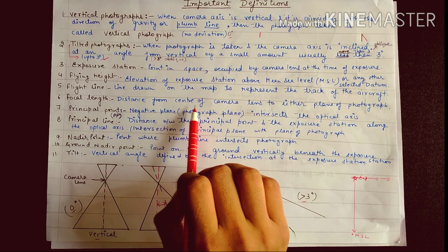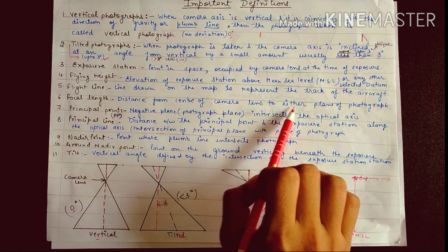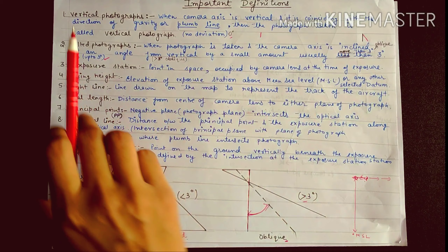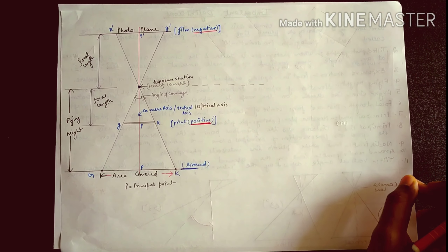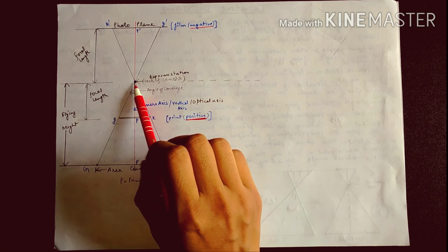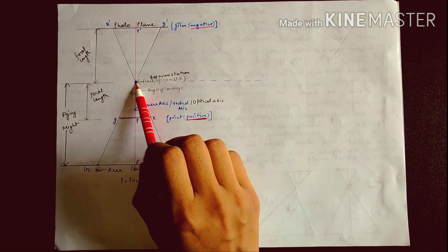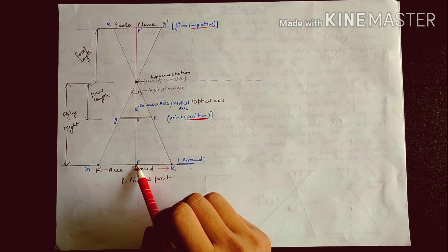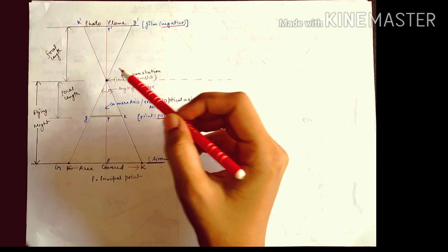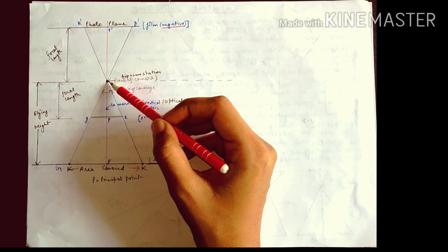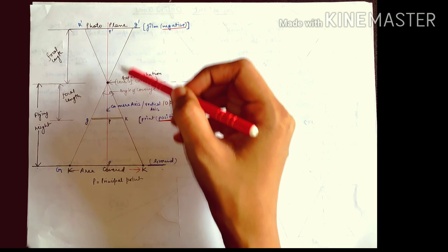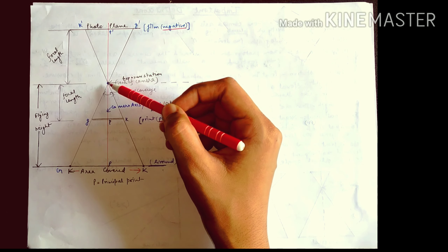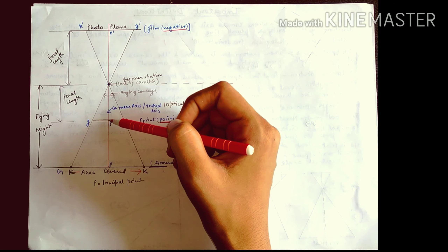Focal length is the distance from the center of the camera lens to either the positive plane or the negative plane of the photograph. There are two planes: the positive plane and the negative plane. The exposure station is where the photo is taken, the MSL or ground is below, and the distance from the lens to the photo plane or negative plane is called the focal length.